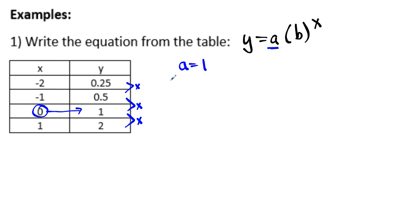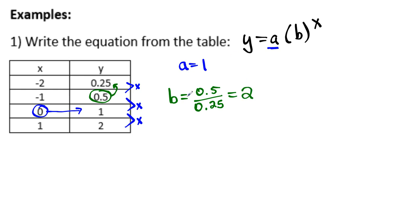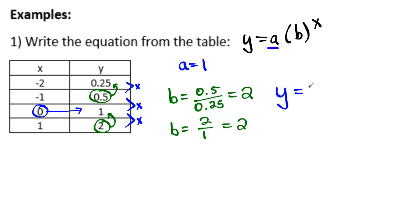To find the scale factor, we work backwards. Take a number like 0.5 and divide it by its previous number, 0.25. If we do that math, we get a value of 2. Let's verify with two different values: 2 divided by 1 also gives us 2. So our scale factor is 2, and our equation is Y equals 1 times 2 to the X power.